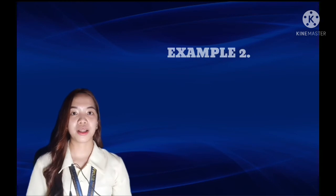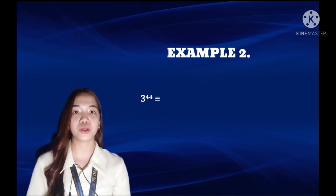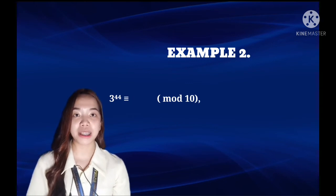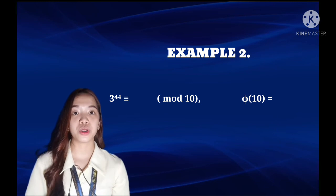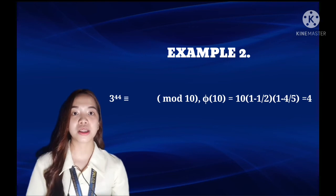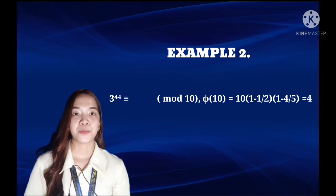Next example is 3^44 is congruent to something mod 10. Again, we probably need to look at φ(10) and we will use the same formula. So this will be 10 times (1 - 1/2) times (1 - 1/5). And it's easy to see that this is equal to 4. Now we probably want to do this in a couple of steps.